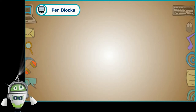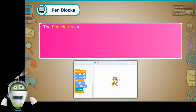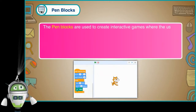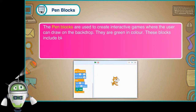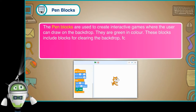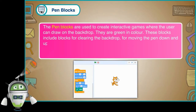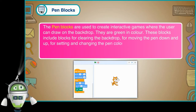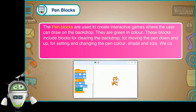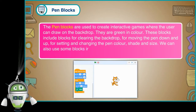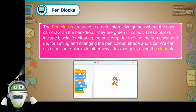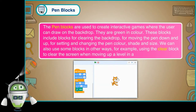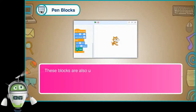Pen Blocks: The pen blocks are used to create interactive games where the user can draw on the backdrop. They are green in color. These blocks include blocks for clearing the backdrop, for moving the pen down and up, for setting and changing the pen color, shade and size. We can also use some blocks in other ways — for example, using the clear block to clear the screen when moving up a level in a game. These blocks are also used to draw a trail as the sprite moves on the backdrop.